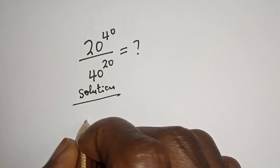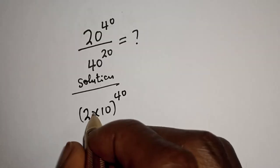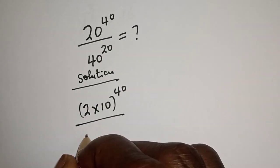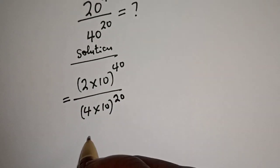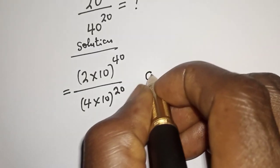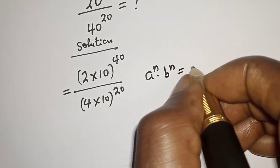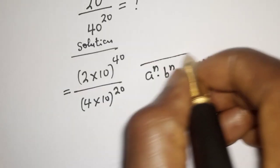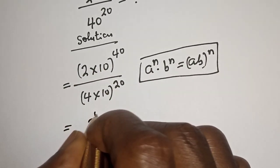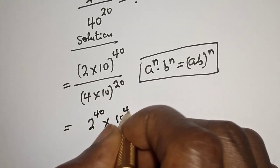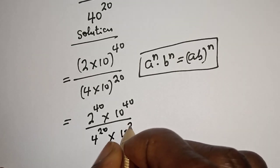20 raised to power 40 can be written as 2 multiplied by 10, raised to power of 40, divided by 40 raised to power 20, which can be written as 4 multiplied by 10, raised to power of 20. Take note of this rule: if you have a raised to power n multiplied by b raised to power n, this is equal to a·b raised to power n. This can be written as 2 raised to power 40 multiplied by 10 raised to power 40, divided by 4 raised to power 20 multiplied by 10 raised to power 20.